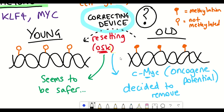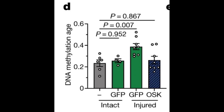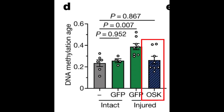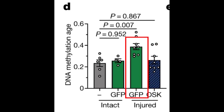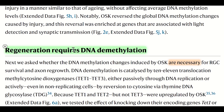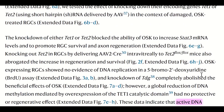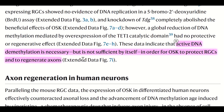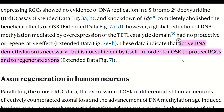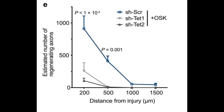Interestingly, when they assessed the DNA methylation age of these retinal cells, they found that after injury, only the cells that were also expressing these three genes — OCT4, SOX2 and KLF4 — showed a reduction in DNA methylation age, compared to cells that weren't expressing these genes, which showed an increase in their DNA methylation age after injury. They then showed that active DNA demethylation is necessary but not sufficient by itself to induce this regenerative potential, which they demonstrated by knocking down the expression of DNA demethylases TET1 or TET2.